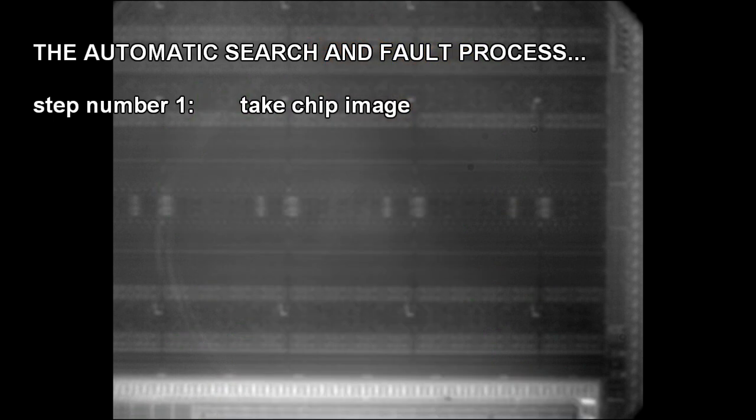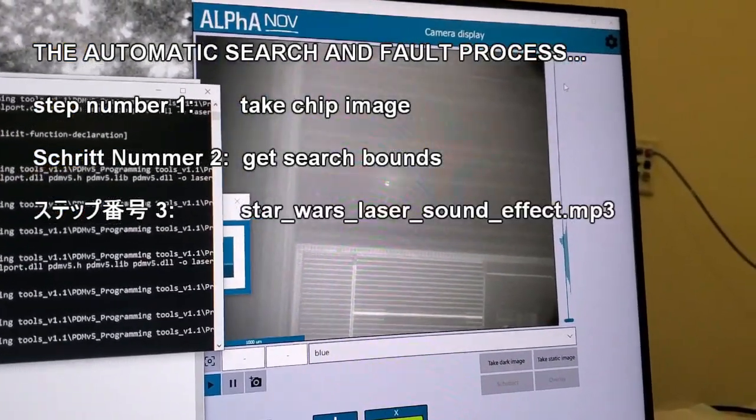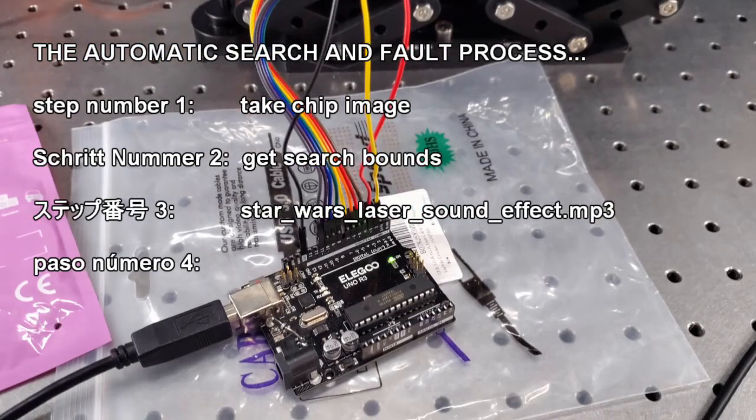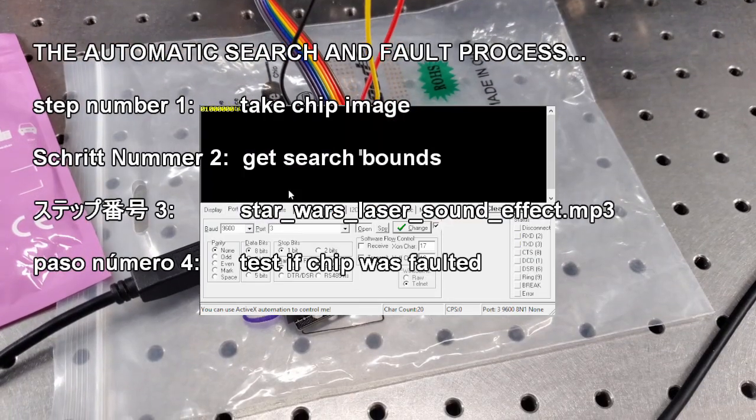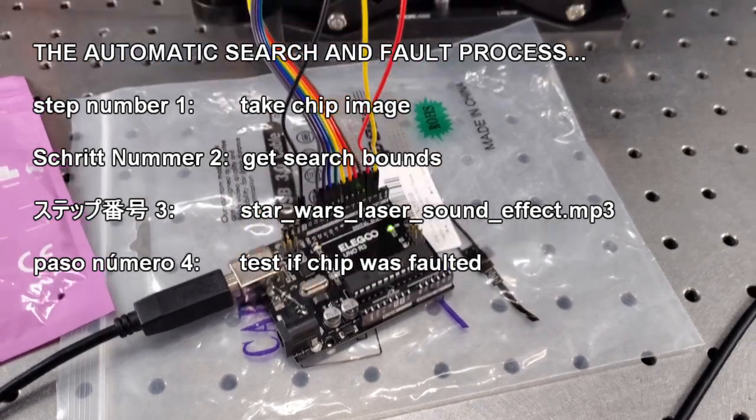The process is as follows. Step number one. Take an image of a chip and set a reference point for drawing on it. Scrit numes vai. Determine the bounds for the search. Sutepu bango san. Fire the laser. Paso numero cuatro. Read and reset the flags from the tester. If there is a fault, reprogram the FPGA and draw a spot on the map.